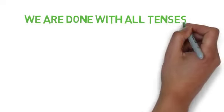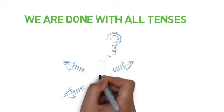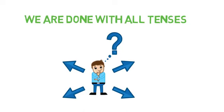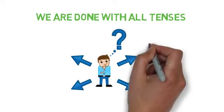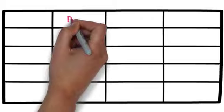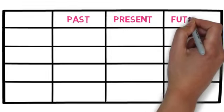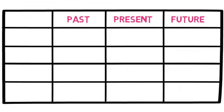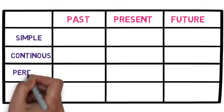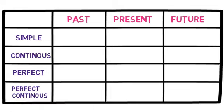We are done with all the tenses. I know it may have created a little confusion, so what we will do is revise them again with the help of a table. In this table, we will have all the main tenses in the first row — past, present, and future — and all the subtypes in the first column: simple, continuous, perfect, and perfect continuous. I will give you a word to remember the tense and sentence structure. Just remember this chart and you will remember all the tenses.